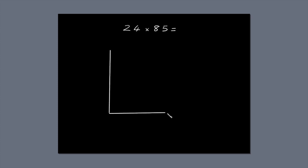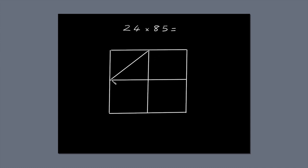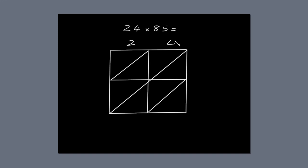Draw a box. Divide it into two columns, because the first number — 24 — has two digits. Divide it into two rows, because the second number — 85 — also has two digits. You end up with a box divided into four smaller boxes — it looks more like a window. Now draw a diagonal through each of the smaller boxes. Write 24 along the top of the box, and 85 down the right-hand side of the box.